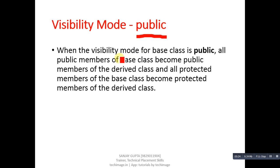The third visibility mode is public. When the visibility mode for the base class is public, all public members of the base class become public members of the derived class, and all protected members remain protected. In this visibility mode, base class members remain the same in the derived class. Public members of the base class can be accessed by an object of the derived class, making this the best visibility mode if you want to access members of both classes in the main function.